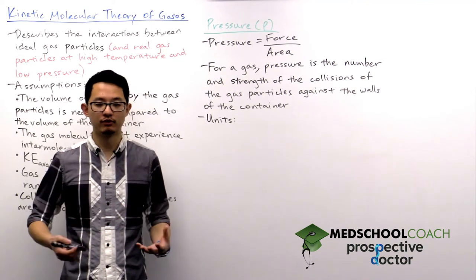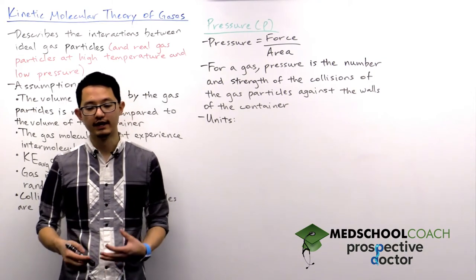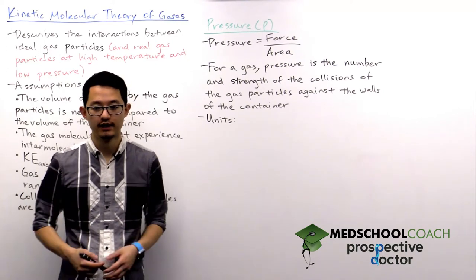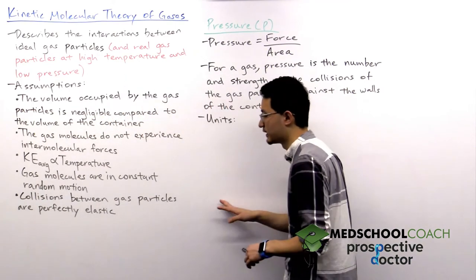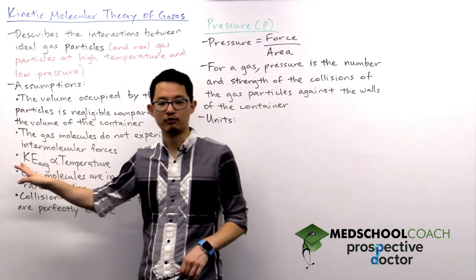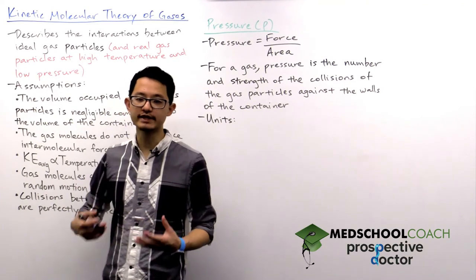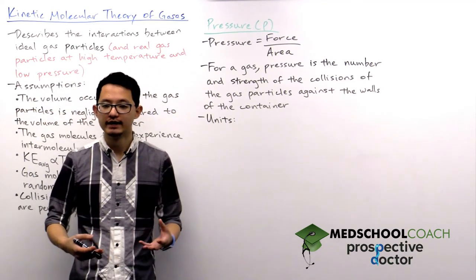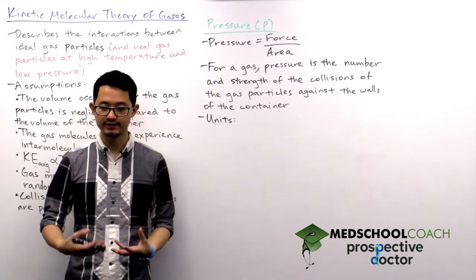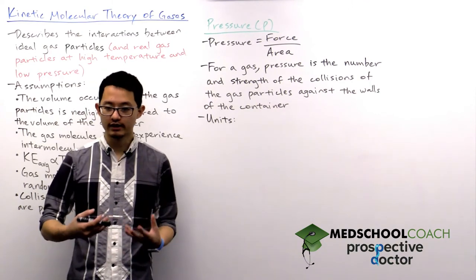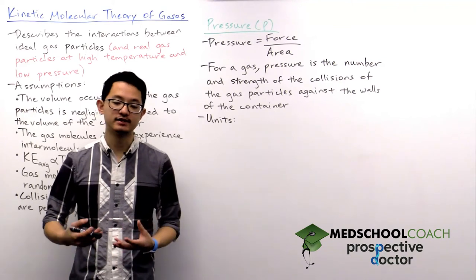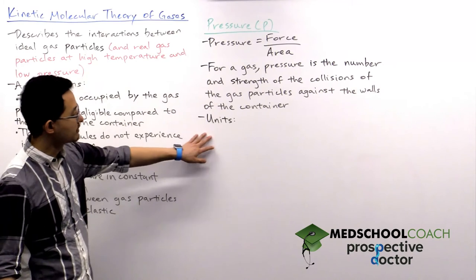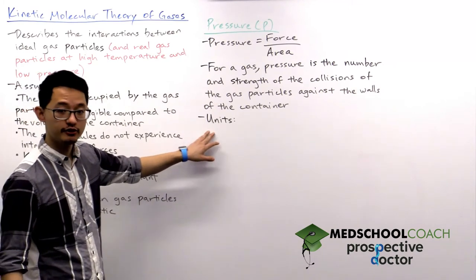So as a simple relationship you should know that the pressure of a gas is directly proportional to the temperature. The reason why is because as we said earlier, temperature is directly proportional to kinetic energy. So you increase the temperature, your gas molecules have more kinetic energy. This means that they are moving faster, so there will be more collisions and stronger collisions against the walls of the container.